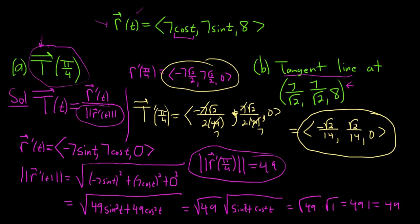A lot of times in problems like this, people make it cleaner. You're allowed to multiply this vector by anything you want — for example, you could multiply the whole vector by 14 and then use that for part b. But let's just leave it as is.